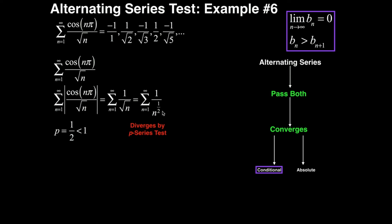This is a p-series, where we have a constant over n to a power. Our p in this case is 1/2. From the p-series test, when p is less than 1, the series diverges. Since p equals 1/2 is less than 1, this series — which is the absolute value of the alternating series — diverges by the p-series test. Because this diverges, the original alternating series is conditionally convergent.